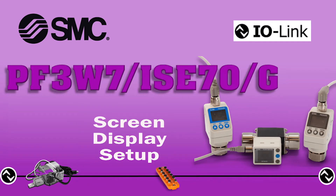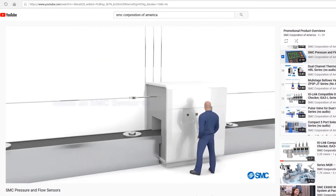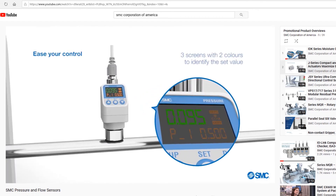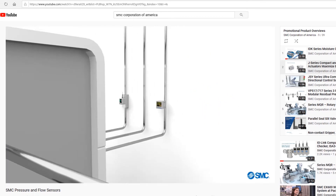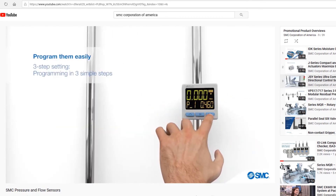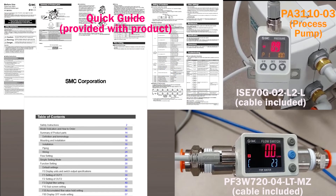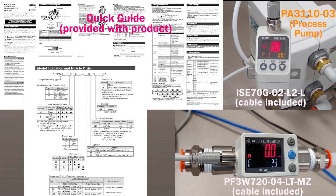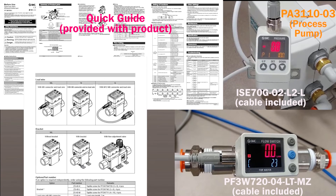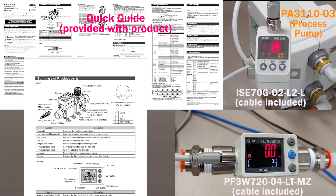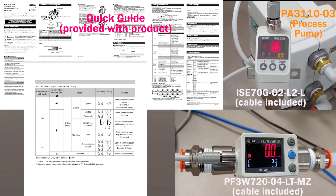Finally, to set up the PF3W7, ISC70, and ISC70G for the desired screen display settings, please refer to the IO-Link ISC70 and ISC70G YouTube product video on our channel, and the PF3W7 and ISC70/ISC70G operation manuals or quick guides to further customize programming. Now that we have verified that all devices are on the network and have set display settings, we're ready for the next step.